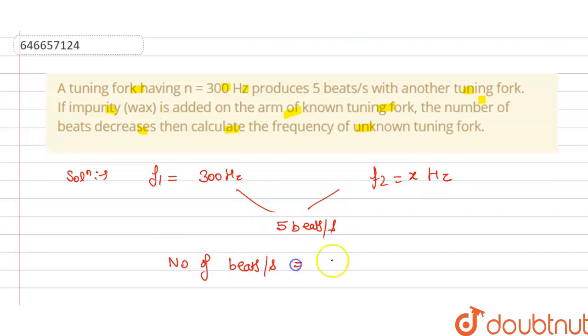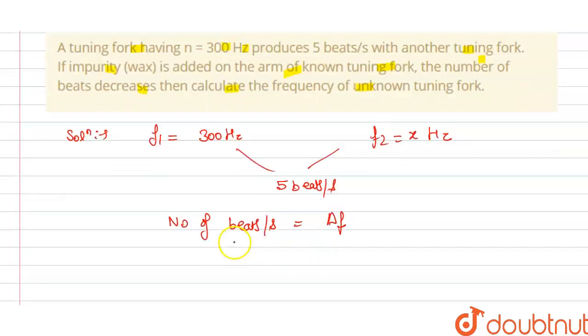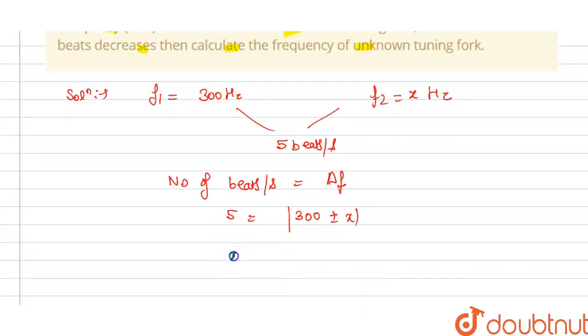which equals the change in frequency. So we have 5 equals the absolute value of 300 plus or minus x. From this we get x equals 305 or 295 Hz and